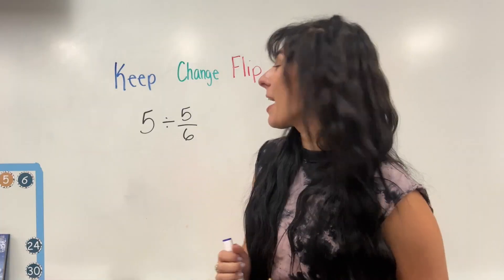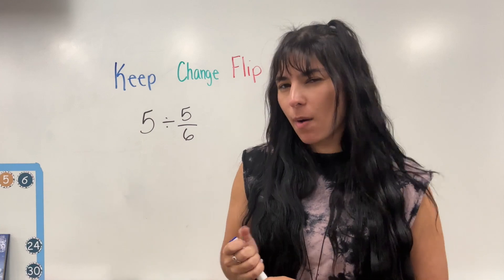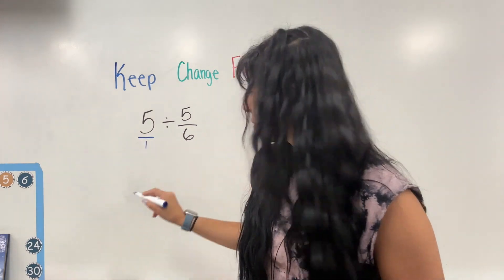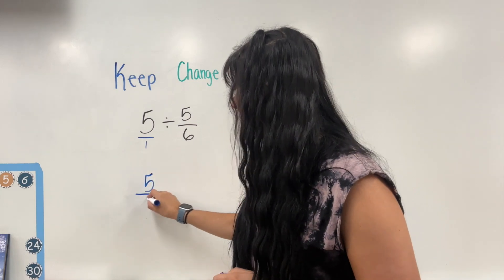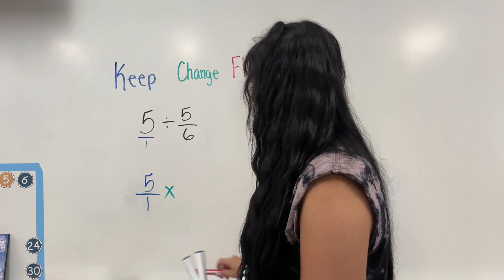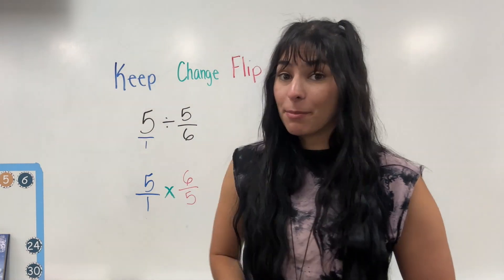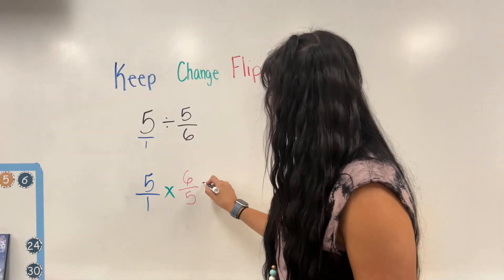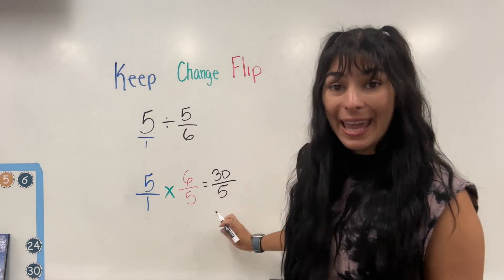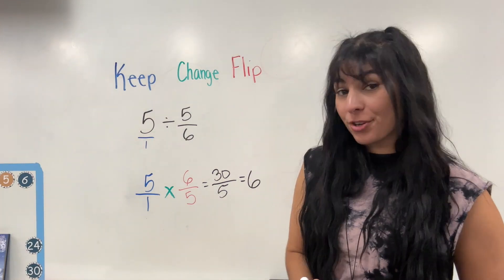Let's do another one. I have five divided by five over six. I'm going to keep that first number. However, in order to make it a fraction, I need to add a denominator of one — so I'm going to have five over one. I change the division to multiplication, and then I flip my last fraction to six over five and multiply like normal. Five times six equals 30, one times five equals five. We can simplify: five goes into 30 six times.